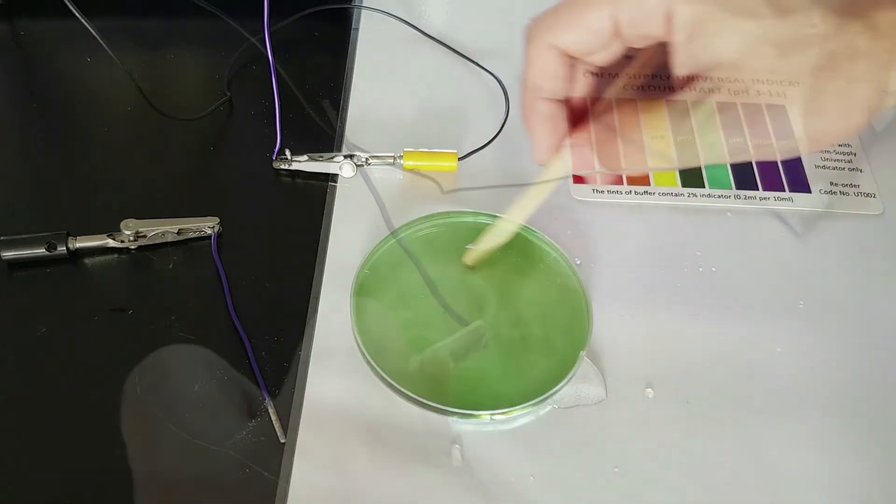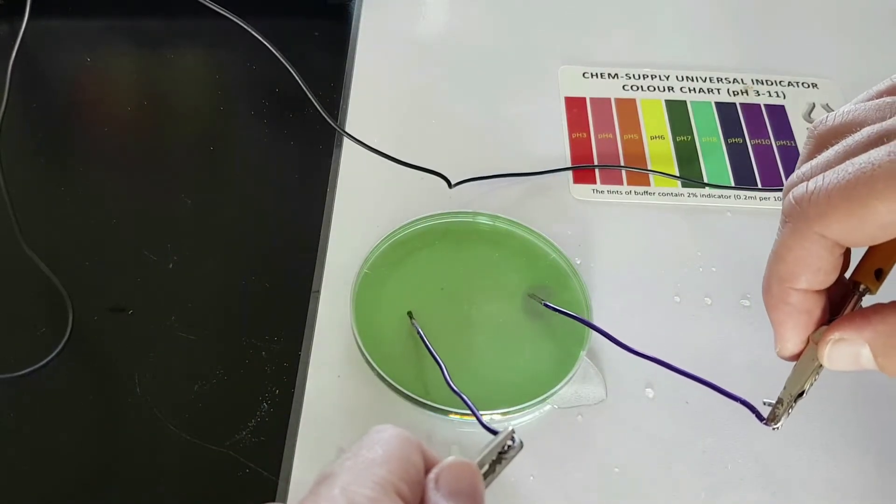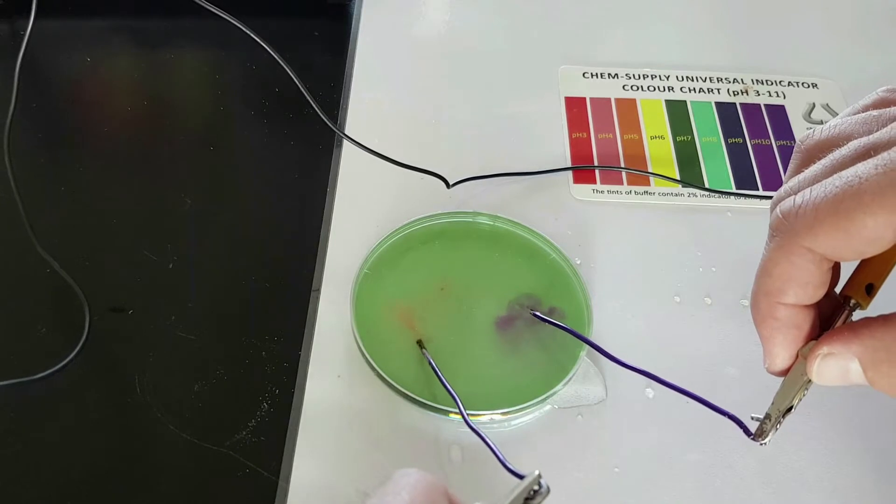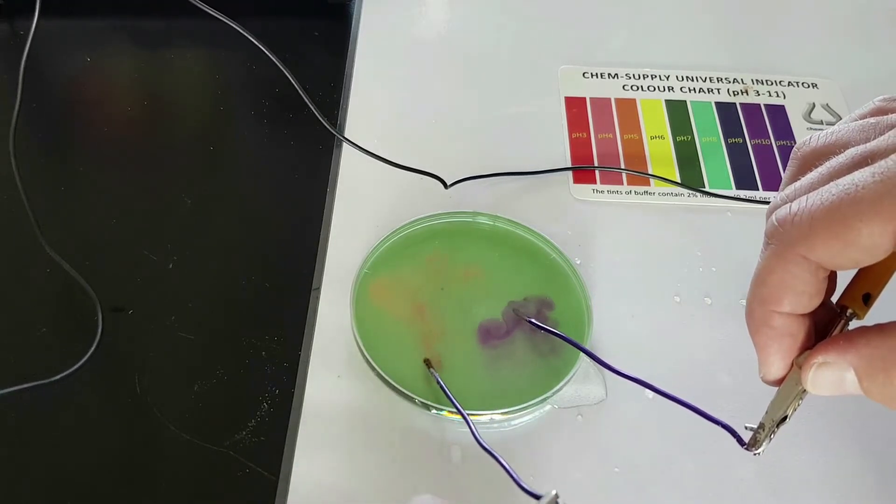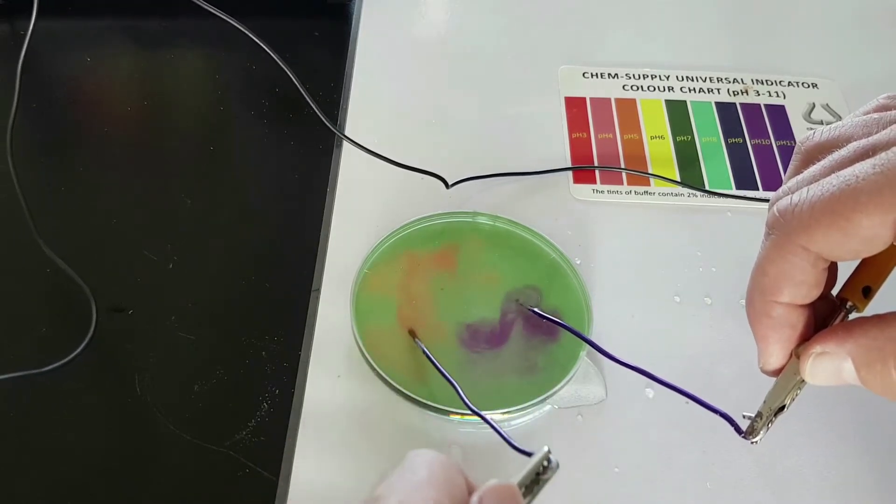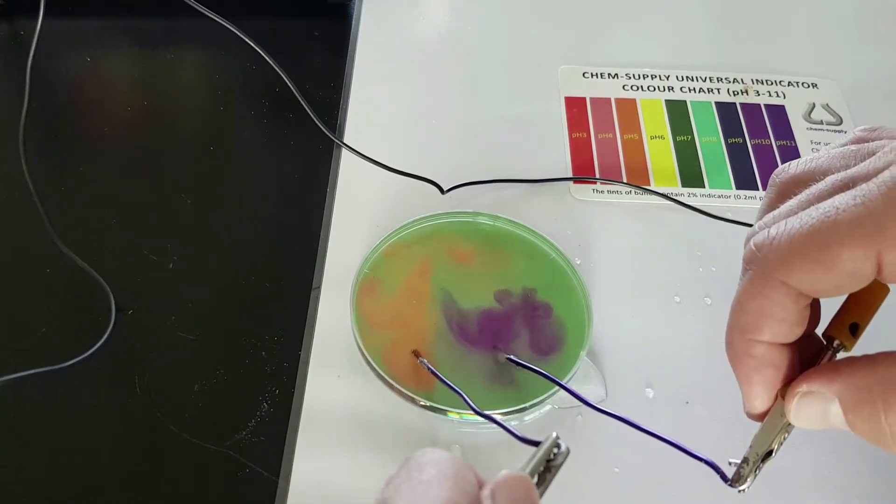Next, you should have your electrodes hooked up to a power pack, put it at about 12 volts and place it into the water. The salt can carry a charge which will then allow the electrolysis to take place and it splits the water.